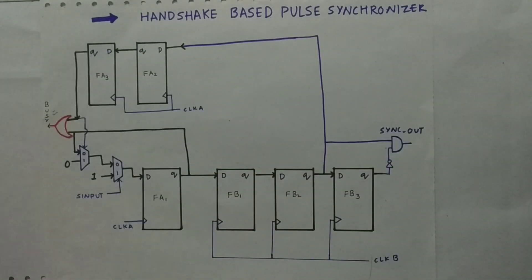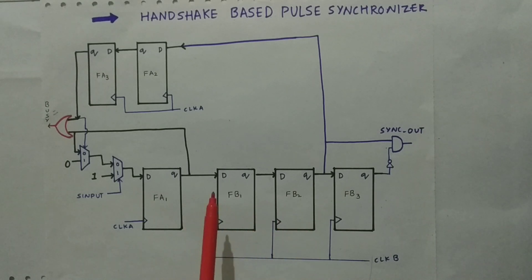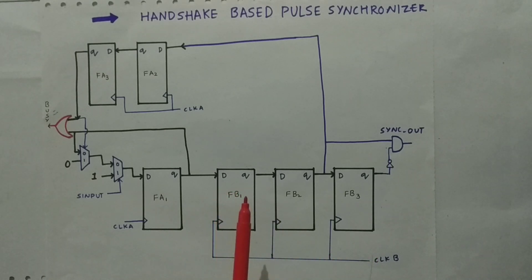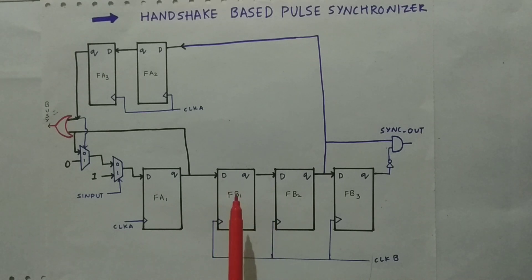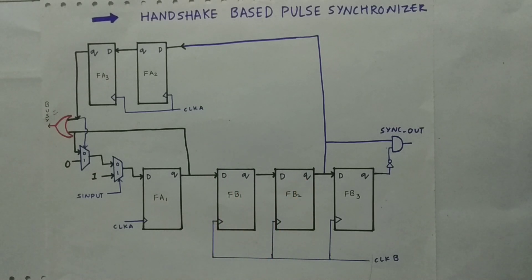Now let us look at what the two-flop synchronizer does. We have FB1 and FB2 as the two-flop synchronizer. When the level reaches the D input of FB1, it is converted into the clock B domain. There can be metastability, so we use this second flop to resolve it. The data is sent from FA1 through to the clock B domain.